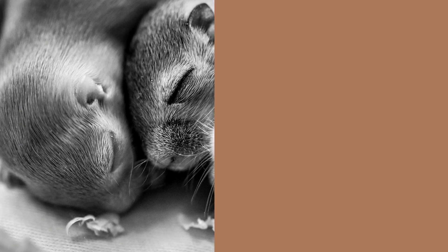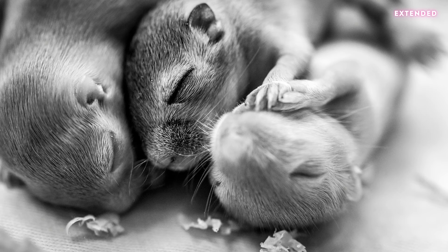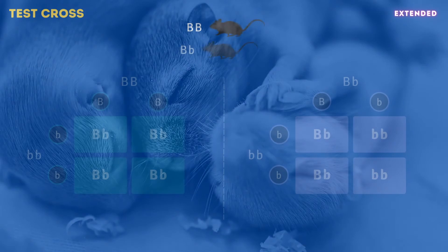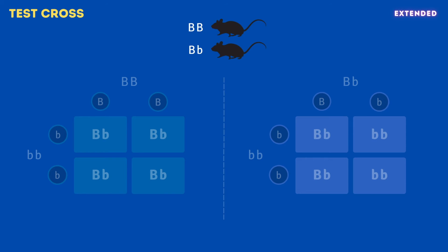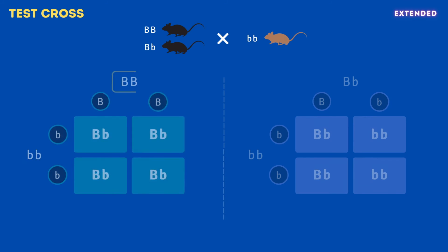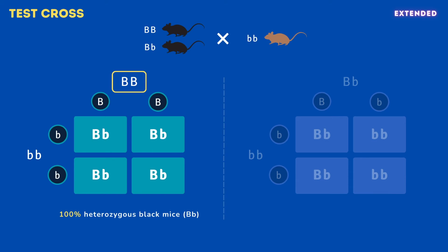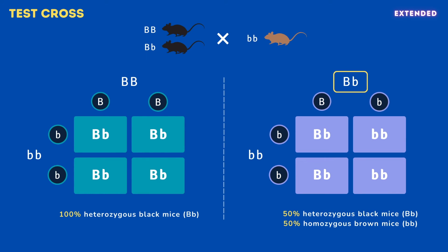That's everything for core, so we'll move on to the extended section. A mouse with black fur could have the genotype BB or Bb. One way to find out is to use a test cross, which involves crossing the black mouse with a known homozygous recessive mouse (bb). If the black mouse is homozygous, all the offspring will be heterozygous black mice. If, however, the black mouse is heterozygous, we would expect 50% of the offspring to be black heterozygotes and 50% to be brown homozygotes. Therefore, if any of the resulting offspring are brown, we can be sure that the black mouse is in fact heterozygous (Bb).